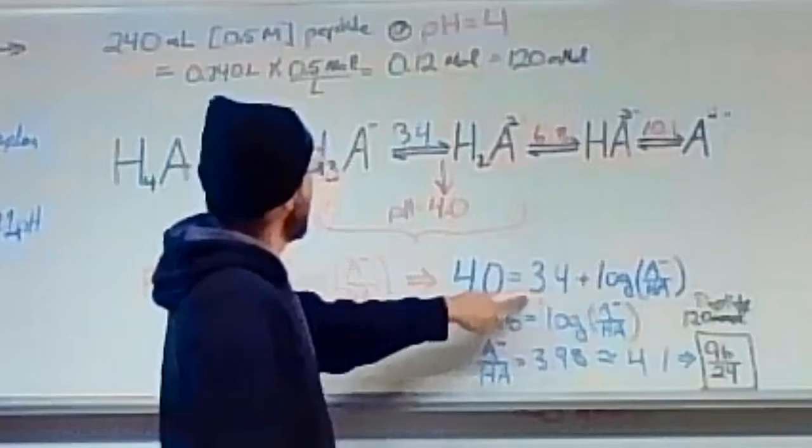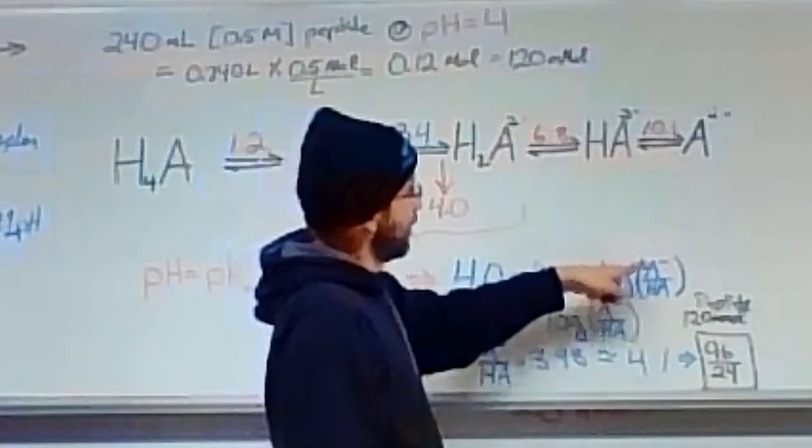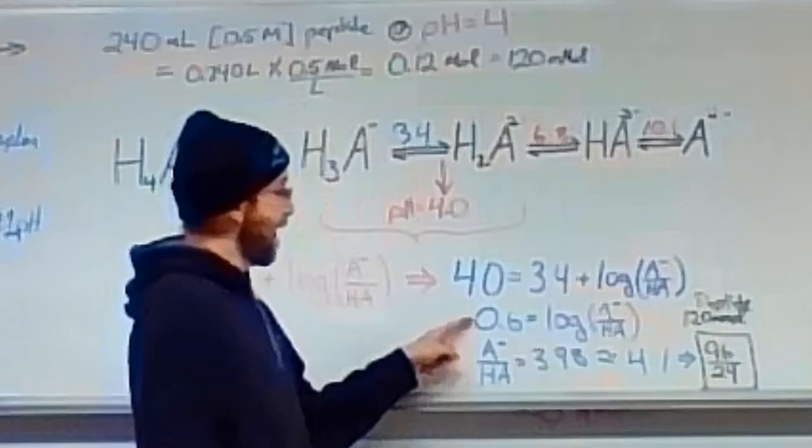we plug and chug our numbers. 4.0, that's what was given to us, equals the pKa, which is this section of our equilibrium, 3.4 plus the log of, now, the conjugate base over the protonated acid ratio.